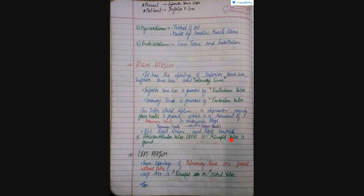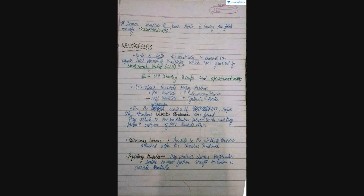The ventricles have openings for the aorta and pulmonary artery. The right ventricle has the opening for the pulmonary artery, while the left ventricle has the opening for the aorta. These openings are guarded by semilunar valves, which consist of three cusps and open towards the artery.